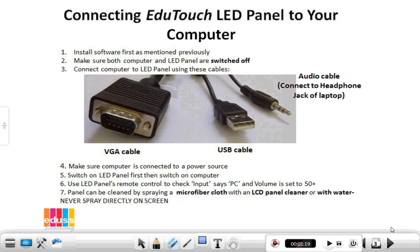Make sure the computer is connected to a power source. Switch on the LED panel first, then switch on the computer. Use the LED panel's remote control to select the green input button that says PC, and set the volume to at least 50.